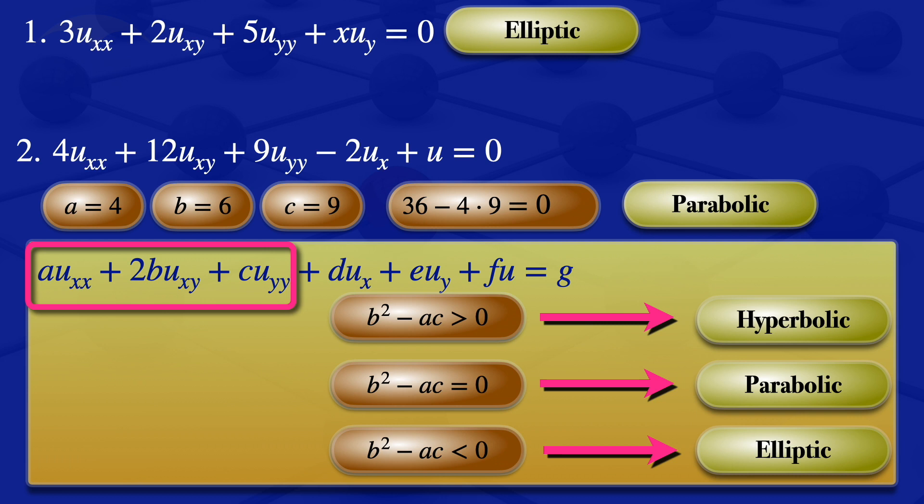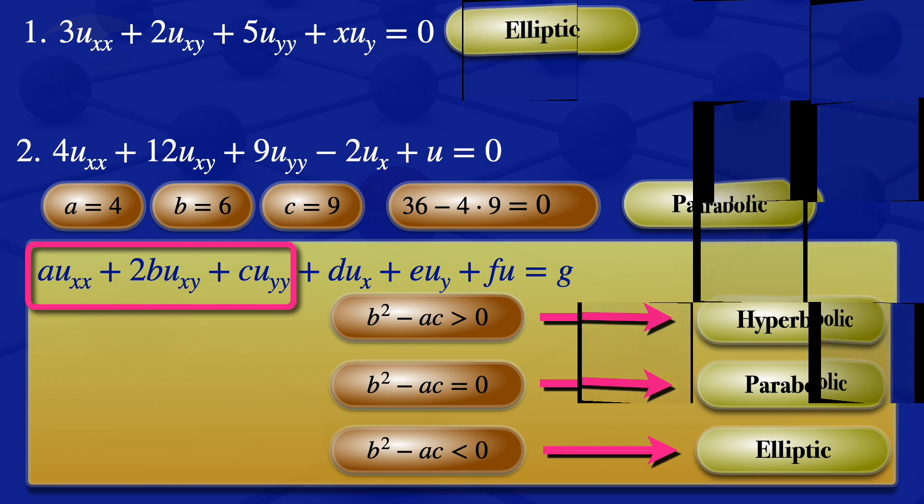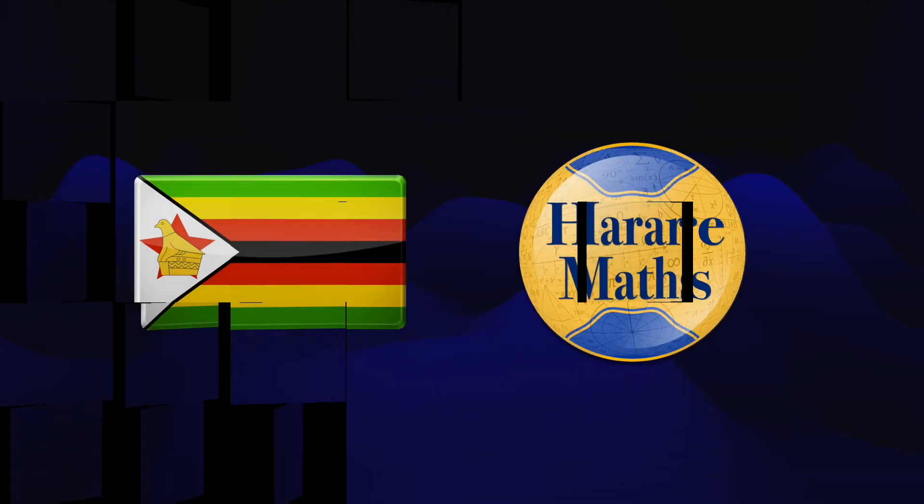So we have those two equations: one is elliptic and the other is parabolic.